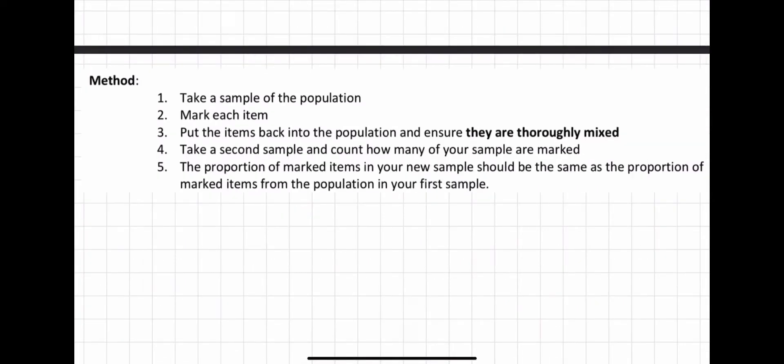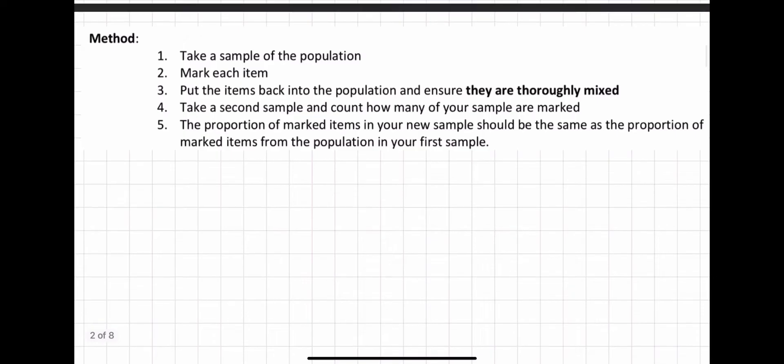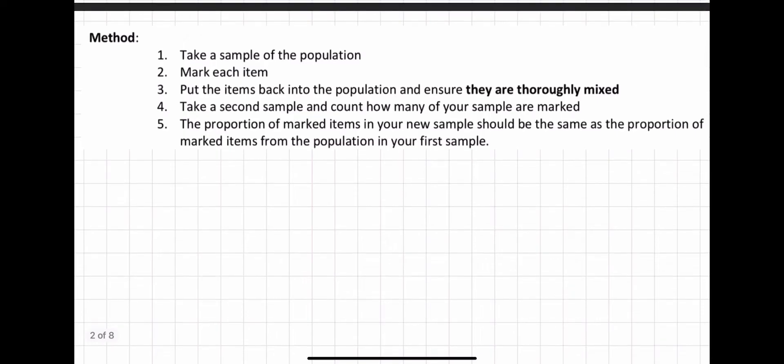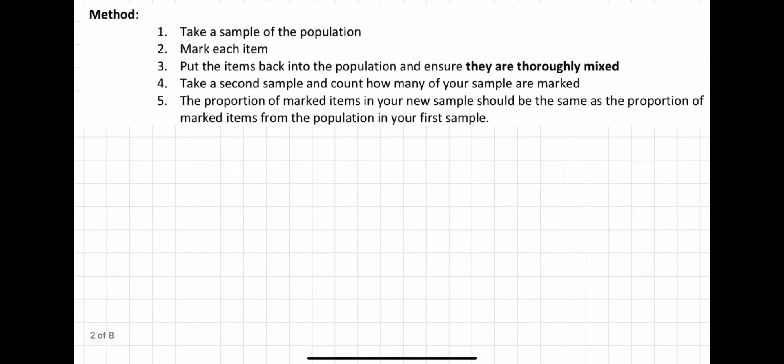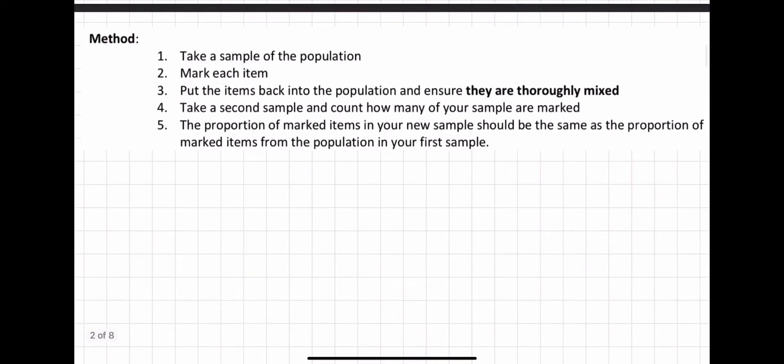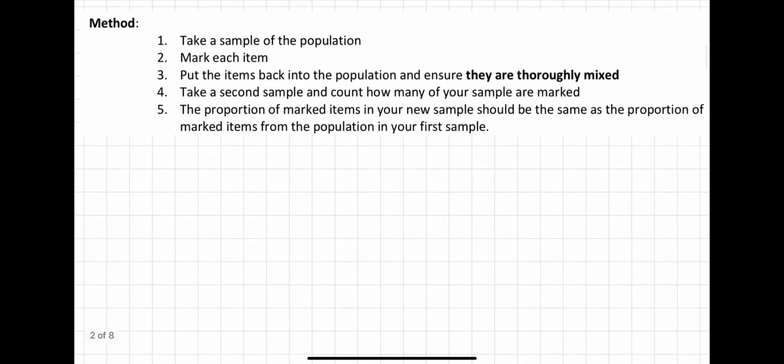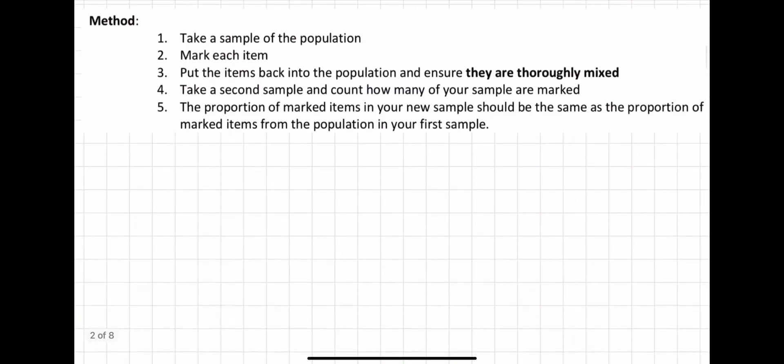Okay, so here's the method we're going to use. You're going to take a sample of the population, mark each of the items, put the items back into the population and ensure they're thoroughly mixed. Take a second sample and count how many of your samples are marked. The proportion of marked items in your new sample should be the same as the proportion of marked items from the population in your first sample.